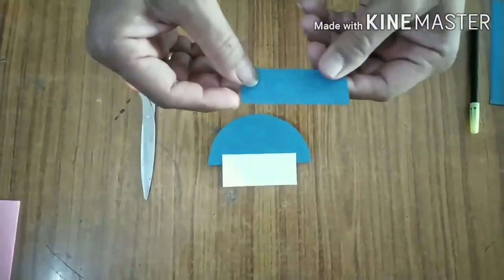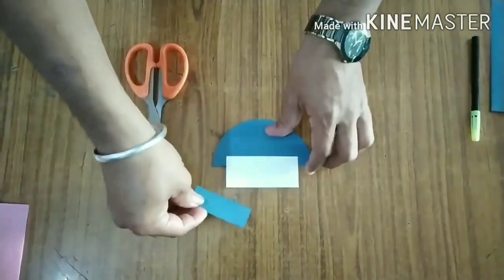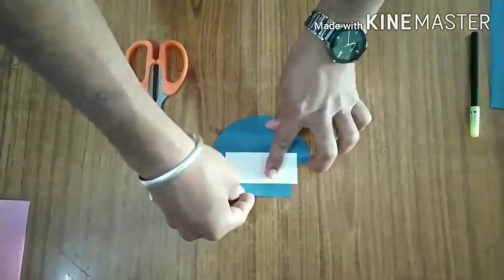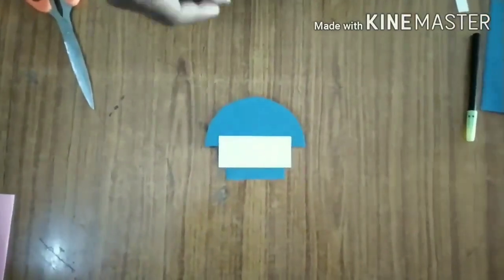Take another smaller rectangular strip and paste it from inside the large strip. Now allow it to dry.